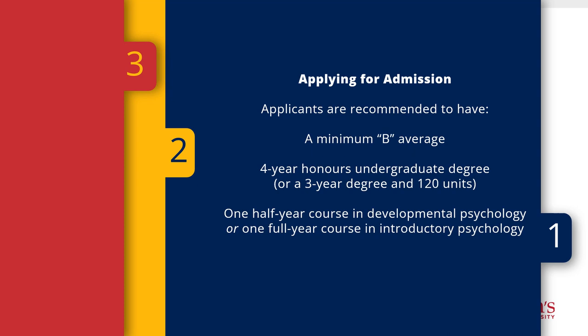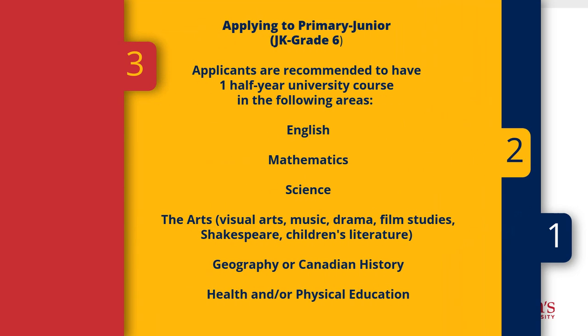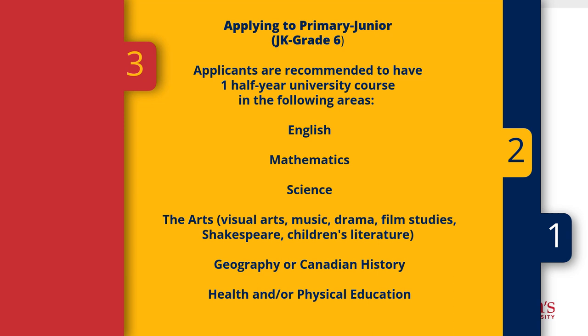These are the recommendations for applicants applying to our consecutive education program. In addition to having a four-year honors undergraduate degree and a minimum B average, we strongly encourage all applicants to have a half-year course in developmental psychology or a full-year course in introductory psychology. For primary junior, we look for applicants that are well-rounded. We recommend having at least one course in English, math, science, the arts, geography, or Canadian history, and health or physical education. These are key areas of the Ontario curriculum.